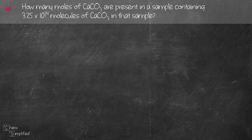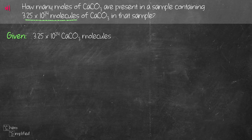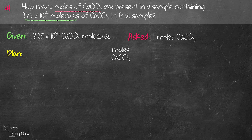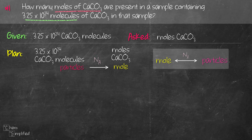Here's our first question. It's asking us to find the moles of CaCO3 in a sample containing 3.25 × 10²⁴ molecules of CaCO3. We're given 3.25 × 10²⁴ CaCO3 molecules and asked to find the moles of CaCO3. The number of atoms, molecules, and ions are all referring to the number of particles. We know we can interconvert between moles and particles using Avogadro's constant, 6.022 × 10²³. So we can easily convert from CaCO3 molecules to moles of CaCO3 using Avogadro's constant.